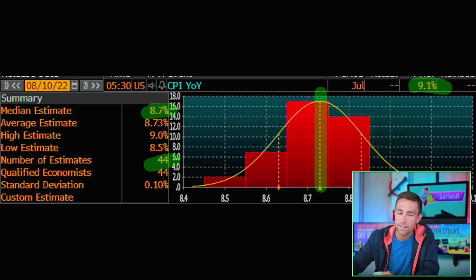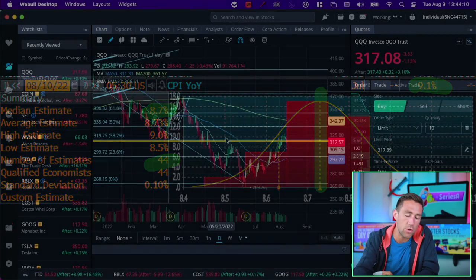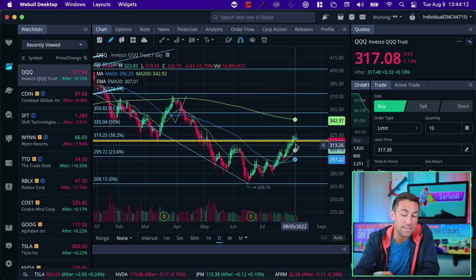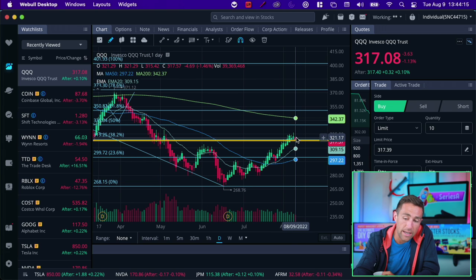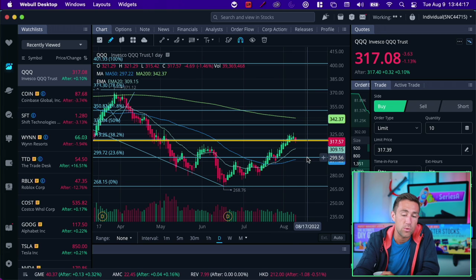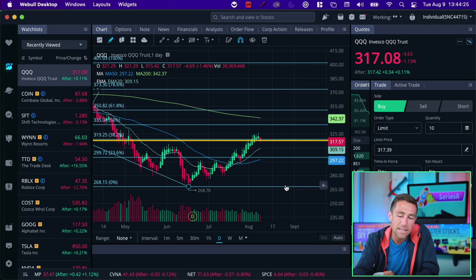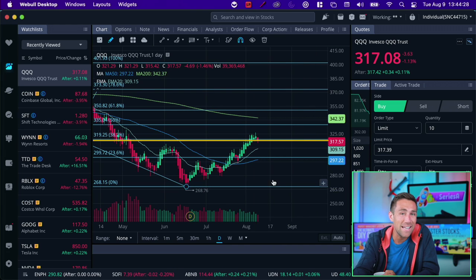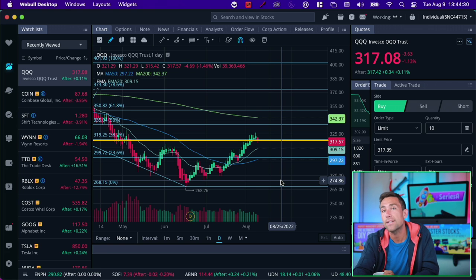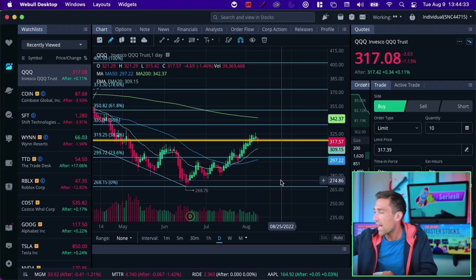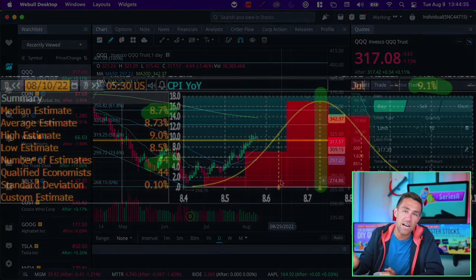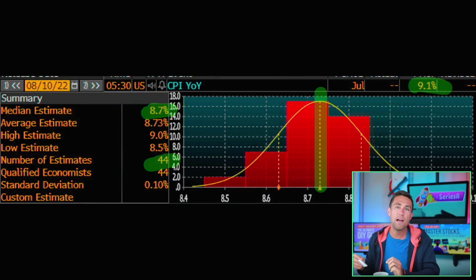And CPI, these numbers right here are dictating or are going to dictate, I should say, whether or not we are actually going to be able to hold, get above this line and hold, or if this red line is going to end up pulling us back to a retracement, back to under 300 QQQ. Potentially, if we get a really bad miss tomorrow, we could be right back into bear market territory around this 268 level for the NASDAQ. Very, very possible. And so everything comes down to 5:30 a.m. Pacific time tomorrow. This CPI report.